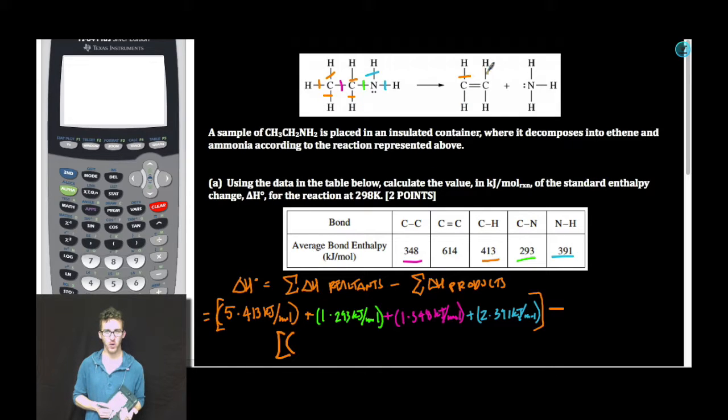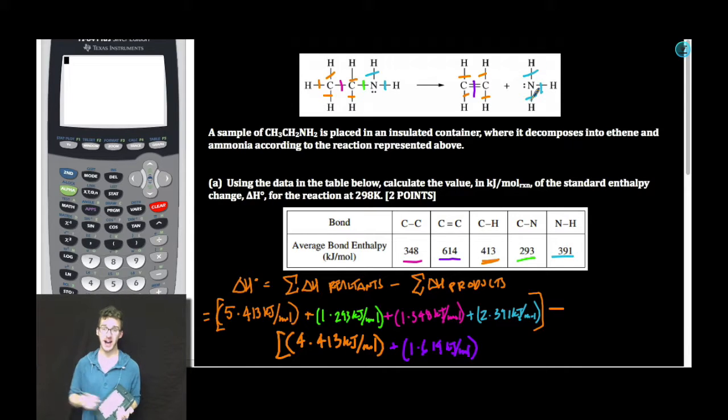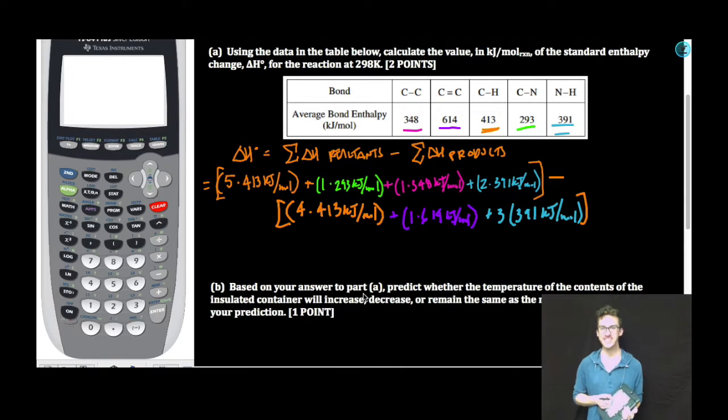I've got four carbon hydrogen bonds, one carbon carbon double bond, and three moles of nitrogen hydrogen bonds. All right, serious calculator time.